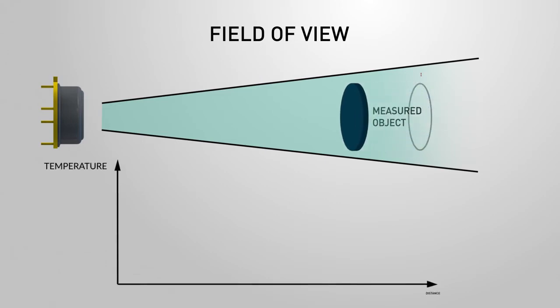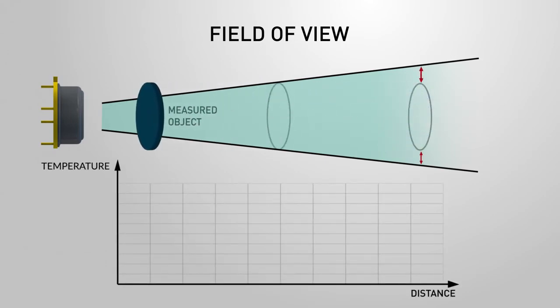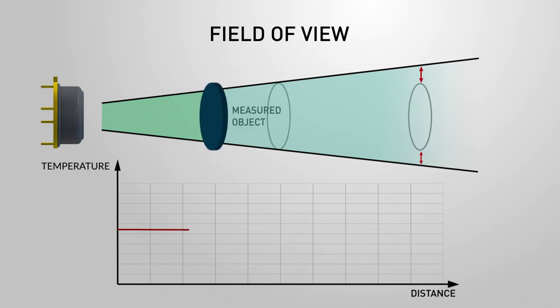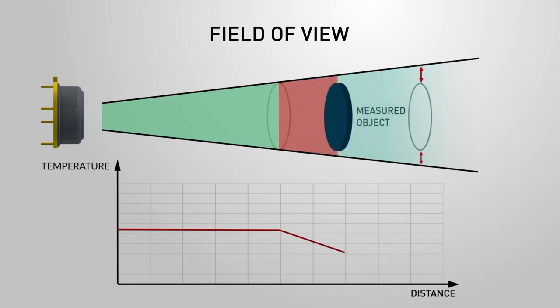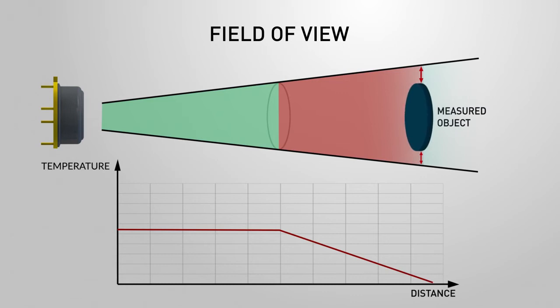It's important that the measured object completely fills the field of view. If this is not the case, the sensor can detect objects that are not supposed to be measured, resulting in an incorrect measurement. Good understanding of the field of view is advised when designing an application with far infrared sensors.